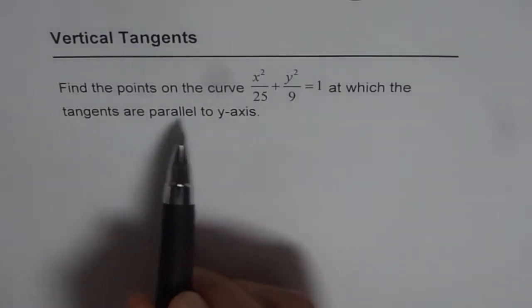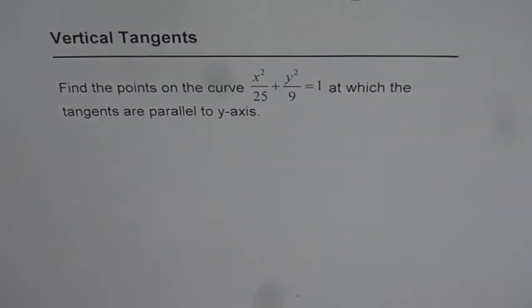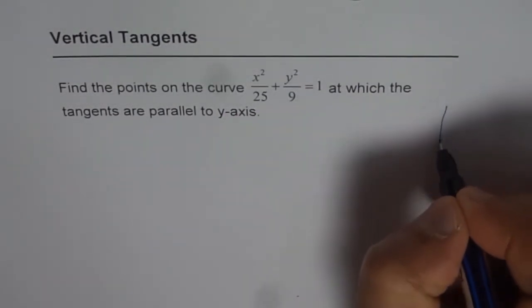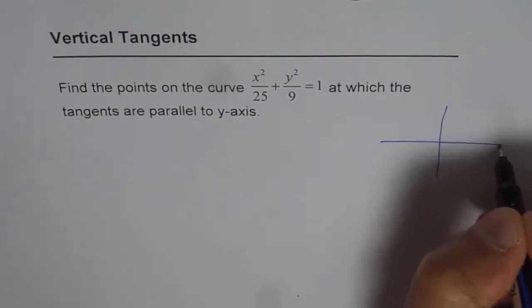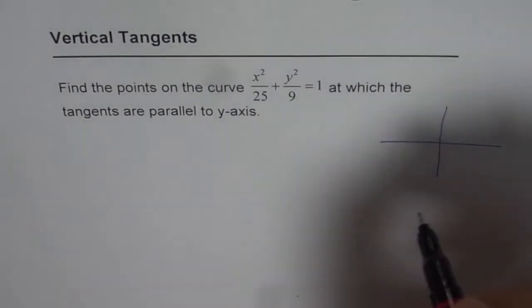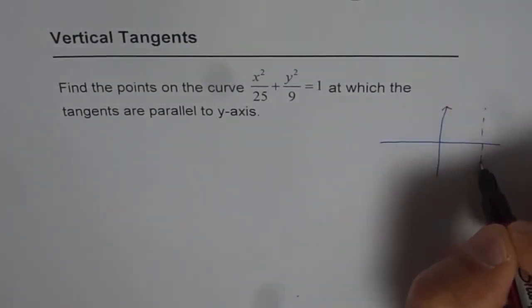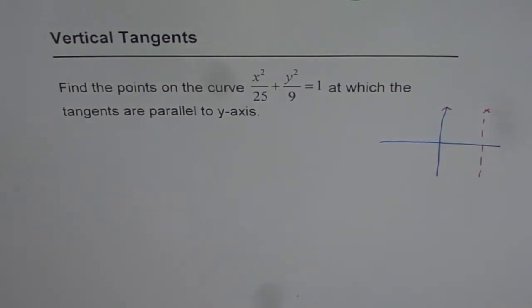Now when we say tangents are parallel to y axis, what does it mean? If you have your coordinate system like this and we say tangents are parallel to y axis, the y axis is this. So that is a tangent parallel to y axis. That means the slope is undefined.